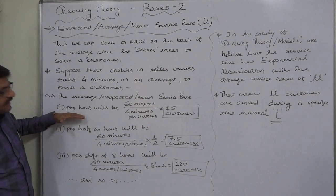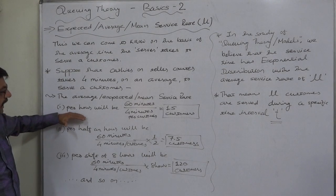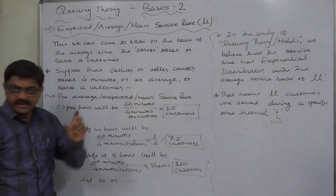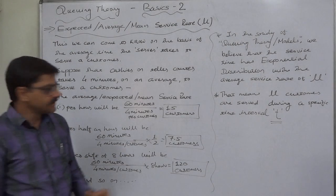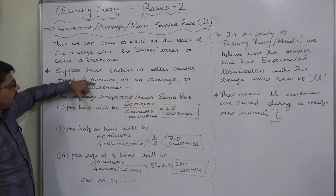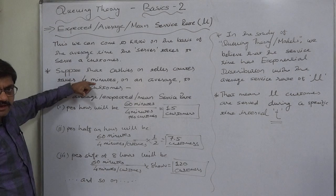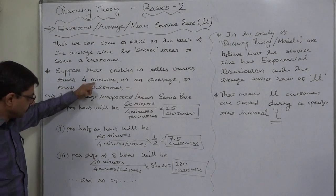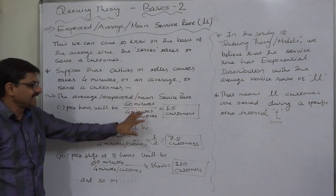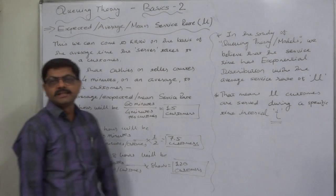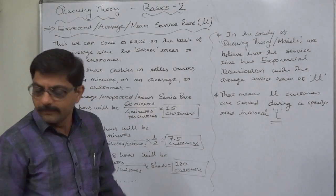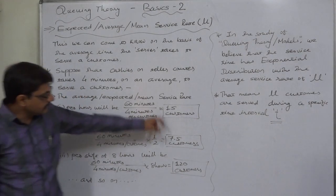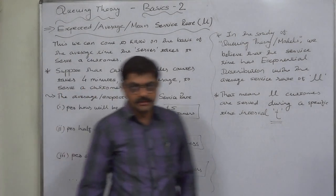Suppose the time interval t is 1 hour. Since the service time is in minutes, we convert: 1 hour equals 60 minutes. The calculation will be 60 minutes divided by 4 minutes per customer, and the answer comes to 15 customers per hour.